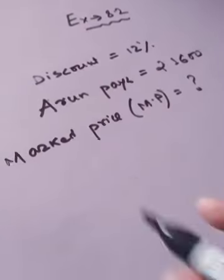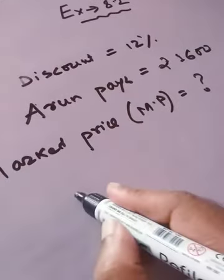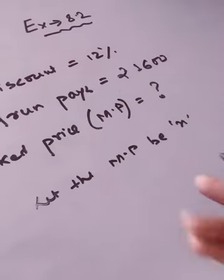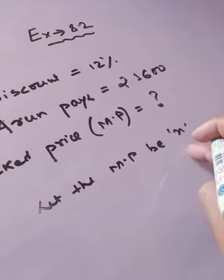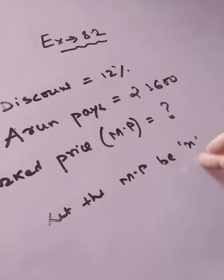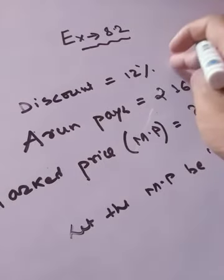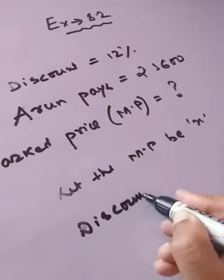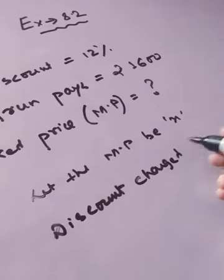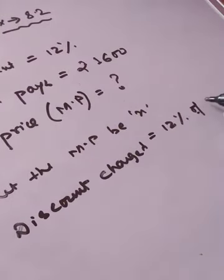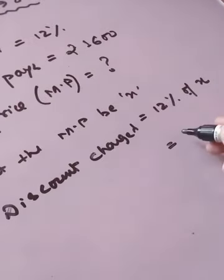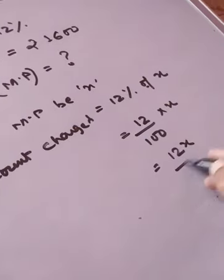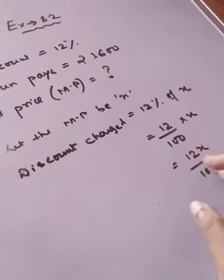Now let's start from the beginning. As we do not know what the marked price is, let the marked price be X. On this X we have to give 12% discount. So the discount charged is 12% of X, which is 12X upon 100.